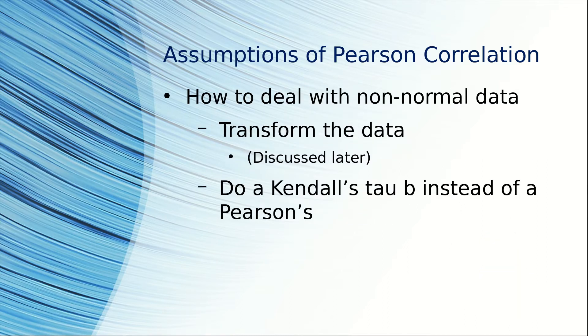What do you do if your data aren't normally distributed? You can transform the data or do a Kendall's tau b instead of a Pearson's.